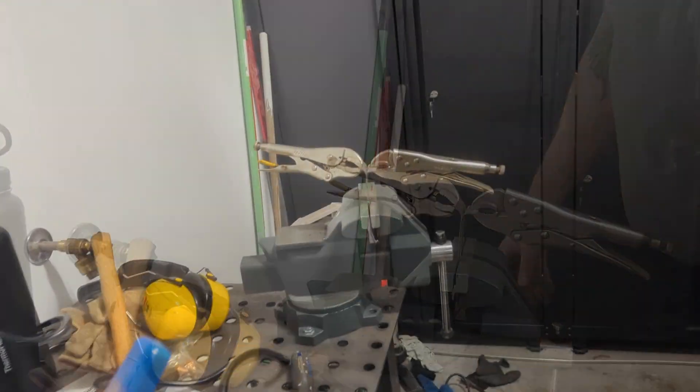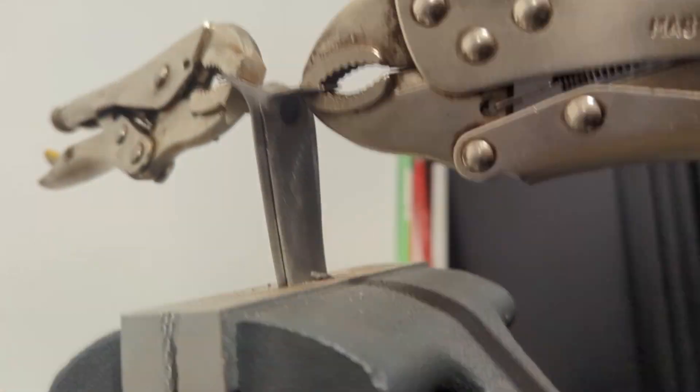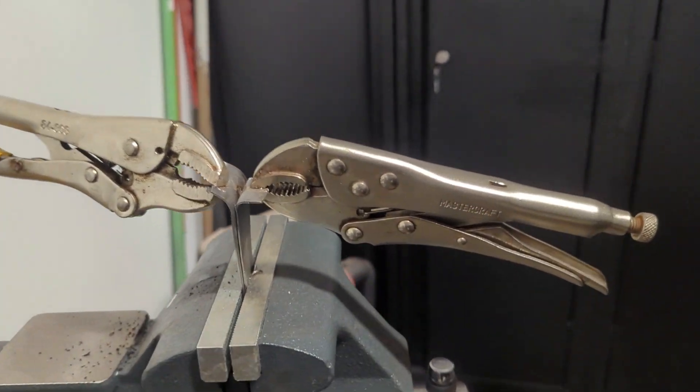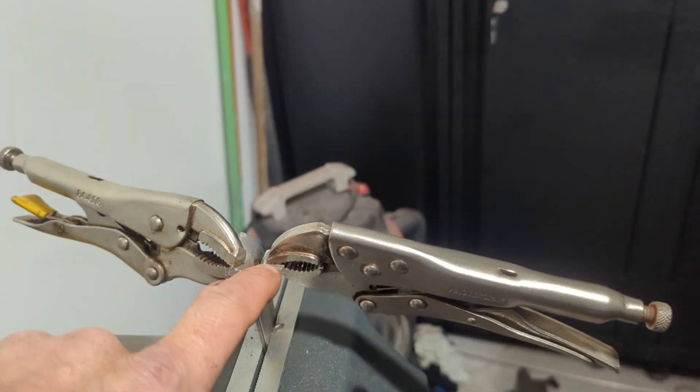As you can see, that is only one spot weld and I held the toggle for three seconds, and that is not coming apart. 18 gauge.